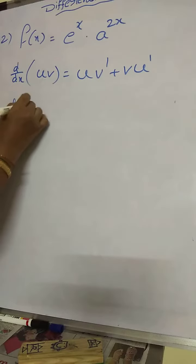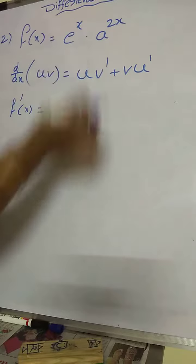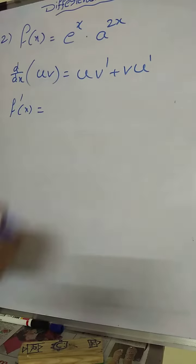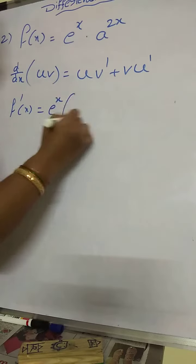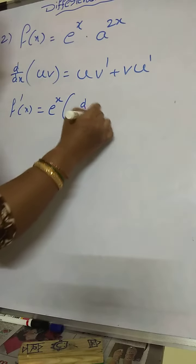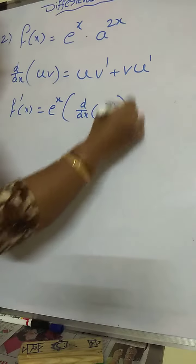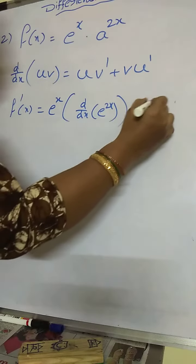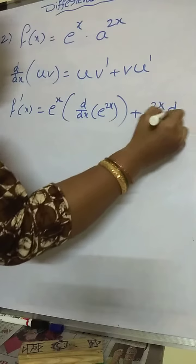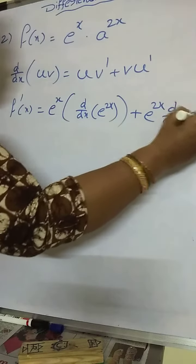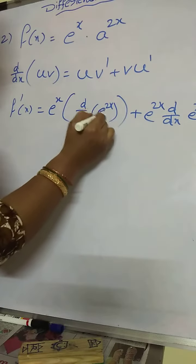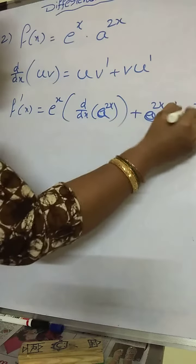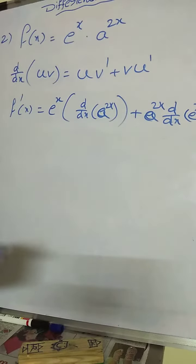Now use that formula. f dash x equal to, u is here e power x, v is here a power 2x. Then apply that formula. e power x into d by dx of a power 2x plus a power 2x into d by dx of e power x.